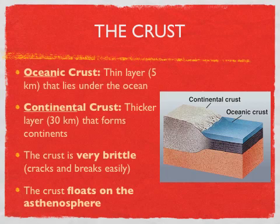Let's take a closer look at the crust. There are two different types of crust: oceanic crust and continental crust. Oceanic crust is all the crust that's underneath our oceans. Oceanic crust is a very, very thin layer. Continental crust is much thicker, but it's actually lighter. The crust is very brittle, which means it cracks and breaks easily — think about an earthquake. Have you seen how the crust breaks during an earthquake? That's because it's very brittle.